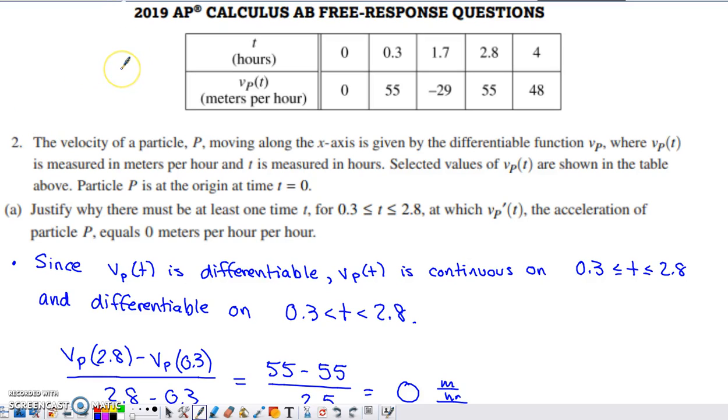This is problem number two from the 2019 AP Calc AB free response set. It's a calculator question. Looking at this table we're provided with, V sub P of T measured in meters per hour implies we're looking at velocity values across the bottom row, and those velocity values are measured at various moments in time. We don't have a consistent delta T in the table, so that's something we'll probably have to pay attention to later. The setup tells us that the velocity of particle P, which is moving along the x-axis, is given by the differentiable function V sub P. Particle P is at the origin at time zero.